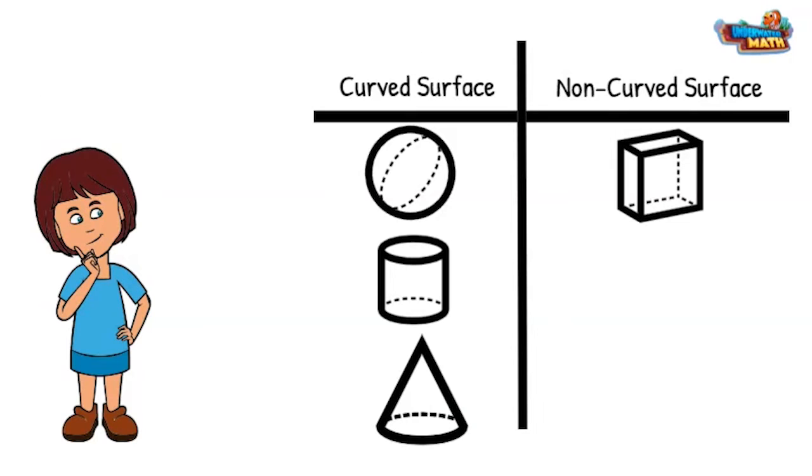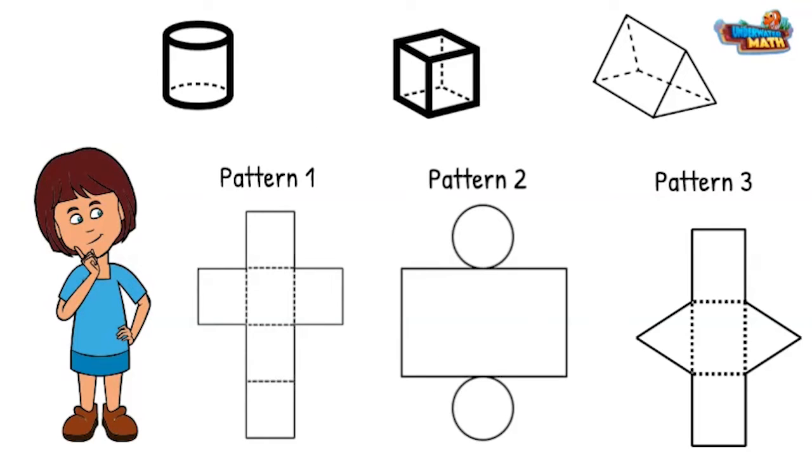Just like two-dimensional shapes, three-dimensional shapes can be composed or put together. Here are some examples of patterns or nets of three-dimensional shapes. To determine what three-dimensional shape will be created from the net, use the shapes in the pattern to help.